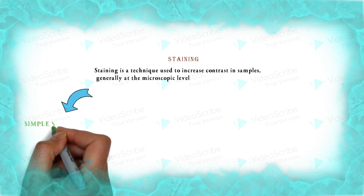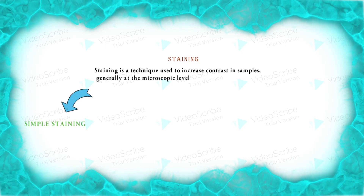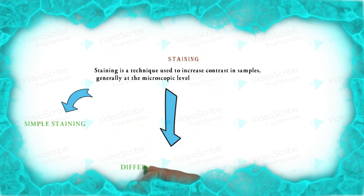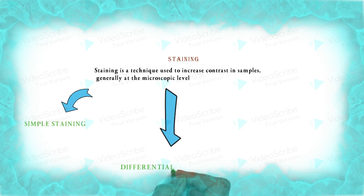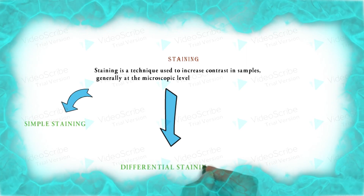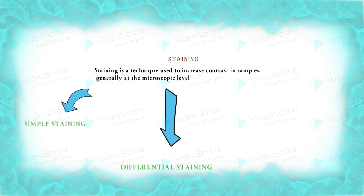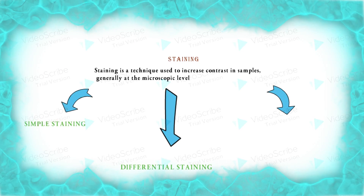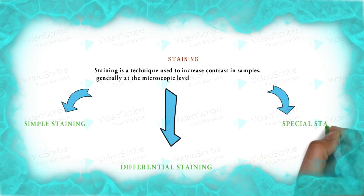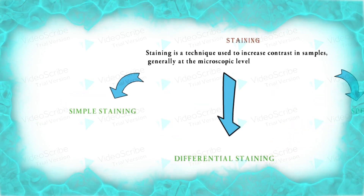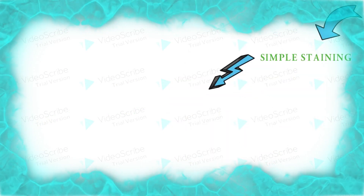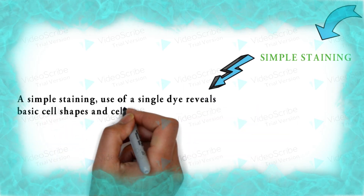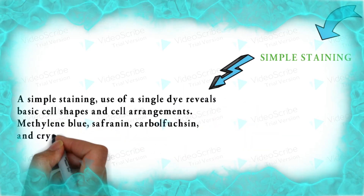Staining can be further divided into three types: simple staining, differential staining, and special staining. In simple staining, we use a single dye which reveals basic cell shapes and cell arrangements.